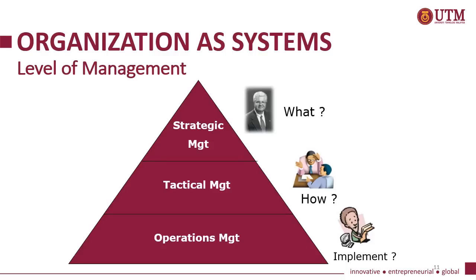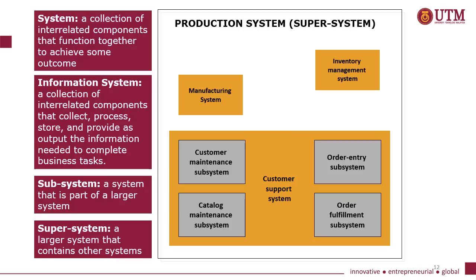This figure shows the levels of management in organisations. Strategic management is responsible for what needs to be implemented. Tactical management is responsible for how it is going to be implemented. Operations management is responsible for the implementation itself. These slides provide the definitions of system, information system, subsystem, and supersystem.